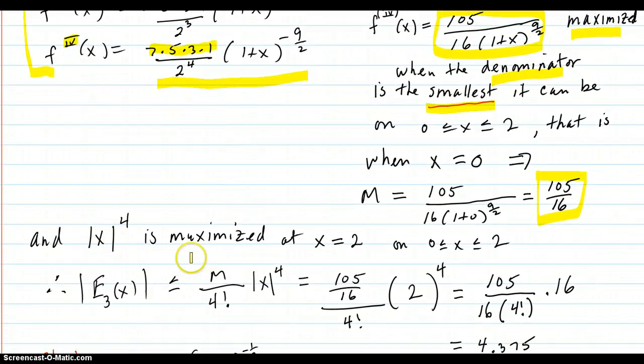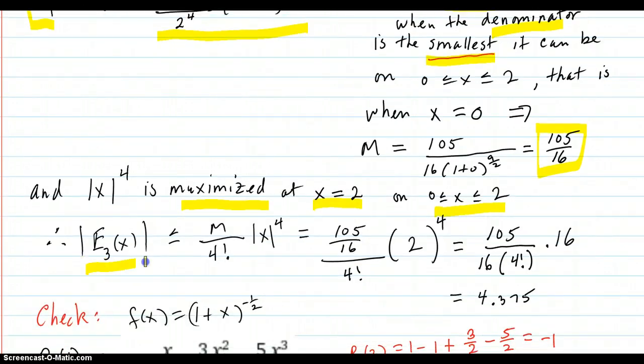But x to the fourth is maximized on this interval at the biggest it can be which is at 2. So the final result is that the error is bounded by m which is this over n plus 1 factorial.